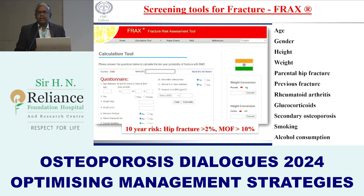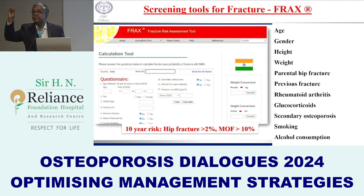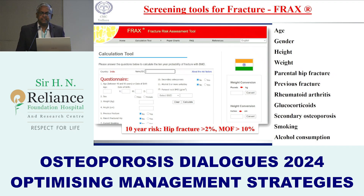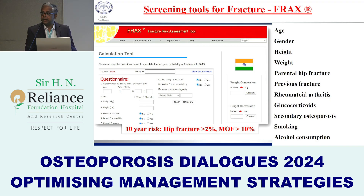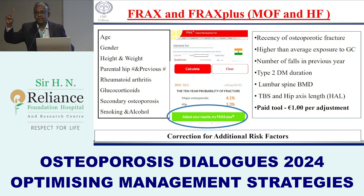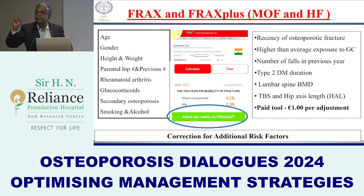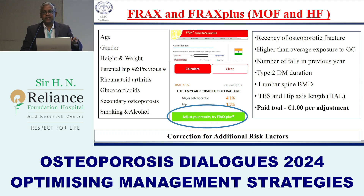As Dr. Puneet mentioned, FRAX has been used for more than a decade. We looked at how it performs in Indian populations using various risk factors without incorporating bone density. Our cutoffs for Indian settings are: more than 10% for major osteoporotic fracture and more than 2% for hip fracture. FRAX Plus is also available — a paid tool at 1 euro per patient — allowing incorporation of number of falls, recency of fracture, and duration of diabetes, which is very useful in the Indian setting.